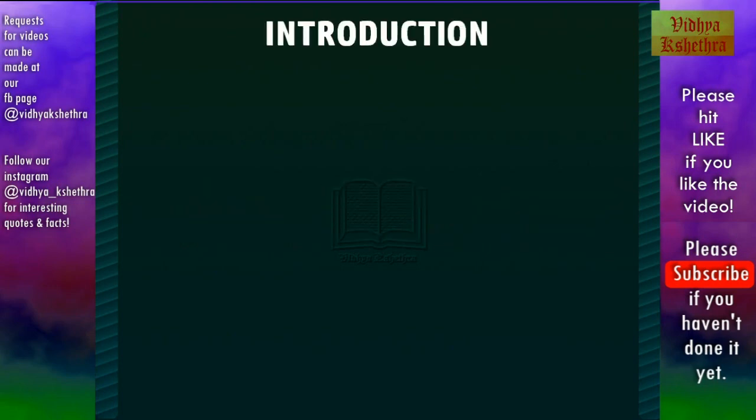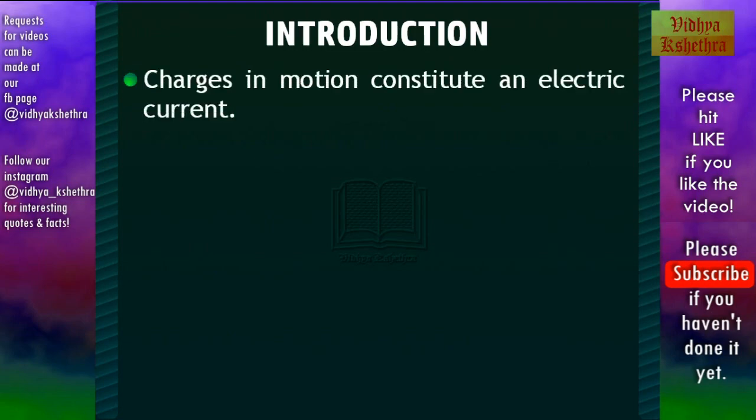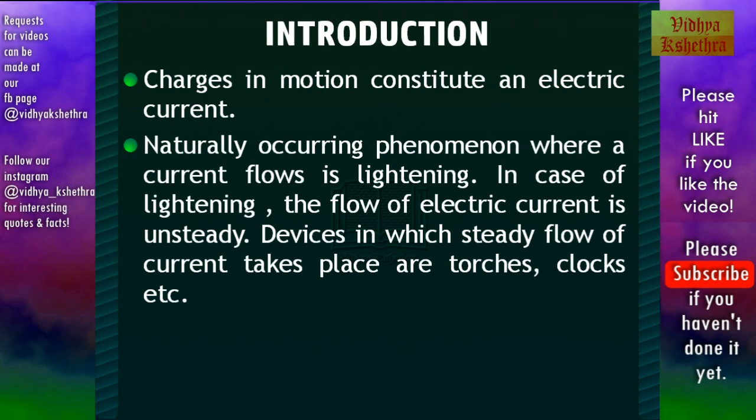So first we shall see the introduction for current electricity. Charges in motion constitute an electric current. The naturally occurring phenomenon where a current flows is lightning. In case of lightning, the flow of electric current is unsteady. This is caused by the discharge of electricity from the storm clouds.